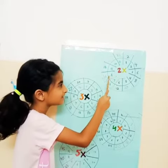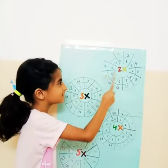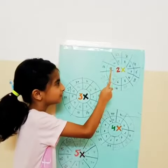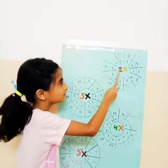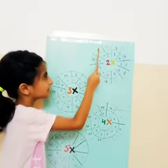2 8's are 16, 2 9's are 18, 2 10's are 20.